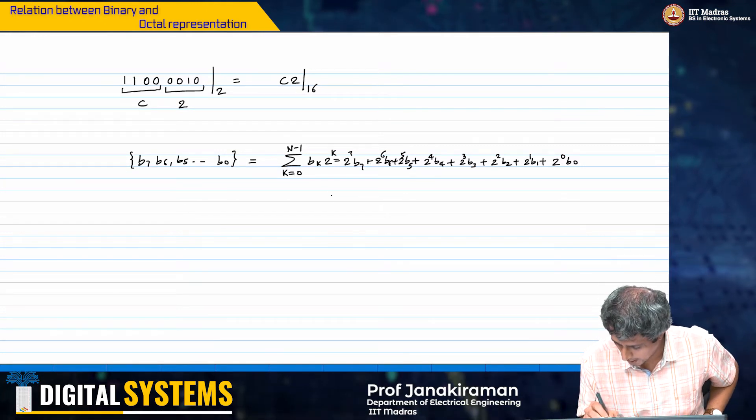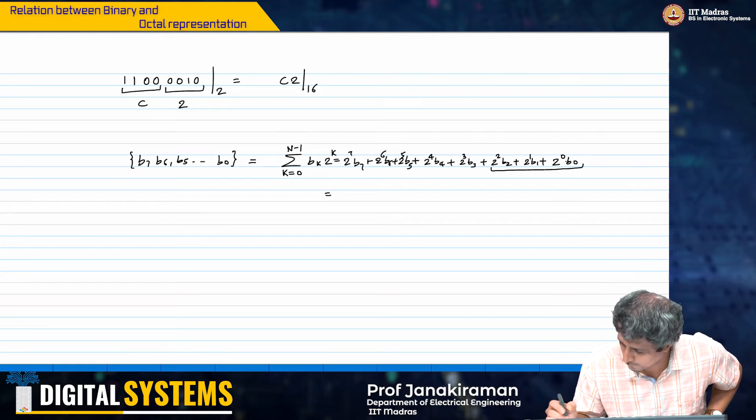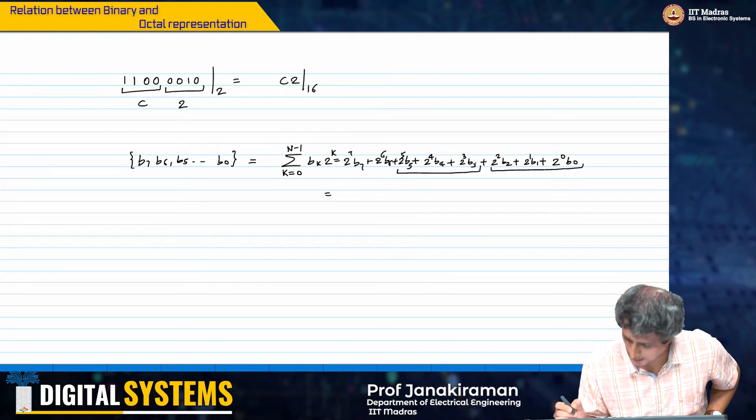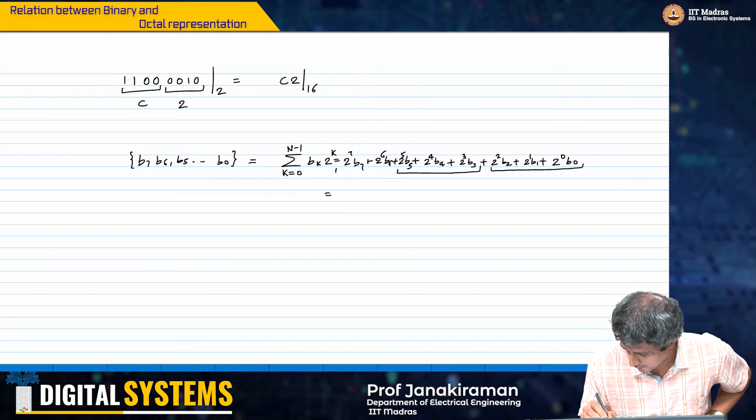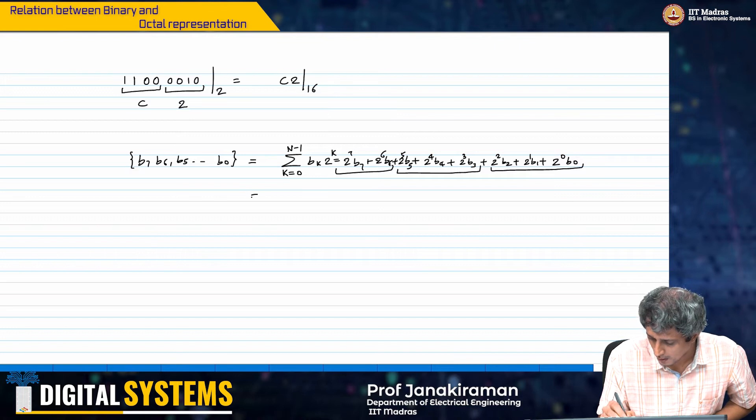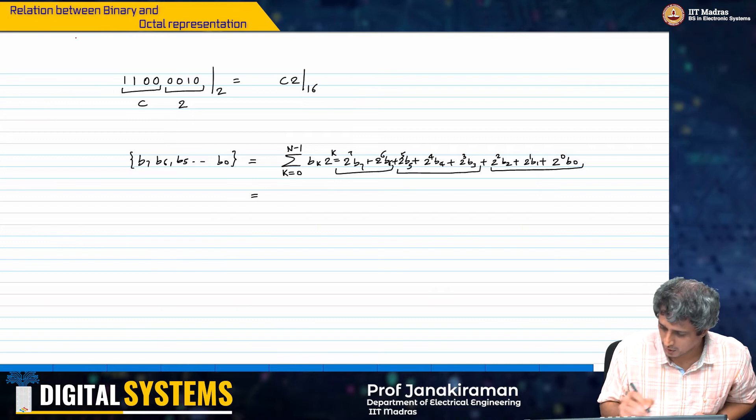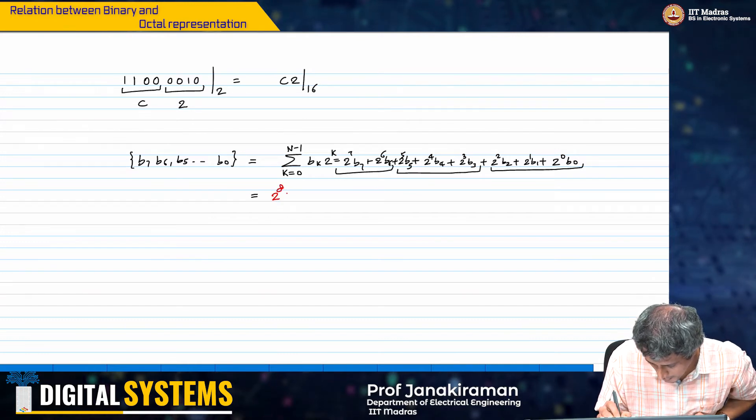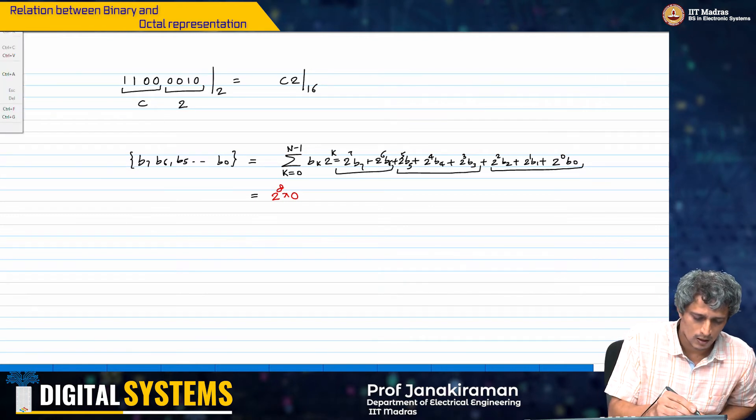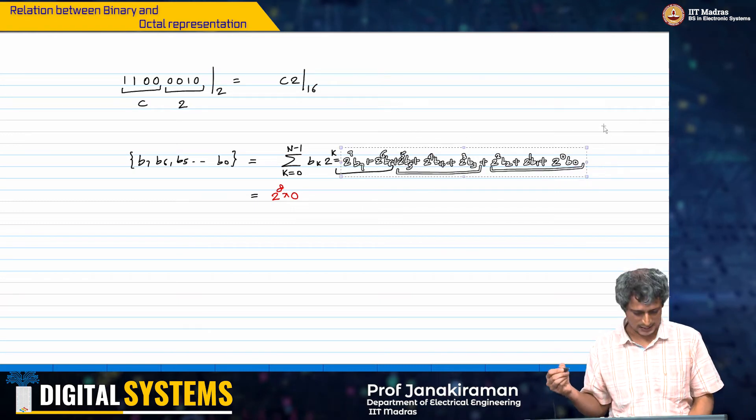Effectively you can write this as 2 power 0 into b0 plus 2 power 1 b1 plus 2 power 2 b2 plus 2 power 3 b3 plus 2 power 4 b4 plus 2 power 5 b5, 2 power 6 b6 plus 2 power 7 b7. All I am going to do here just like I did in the hexadecimal case, I will group in sets of 3 instead of 4.